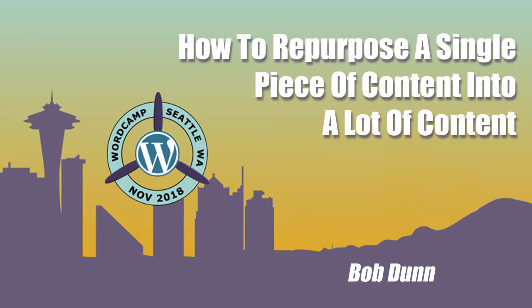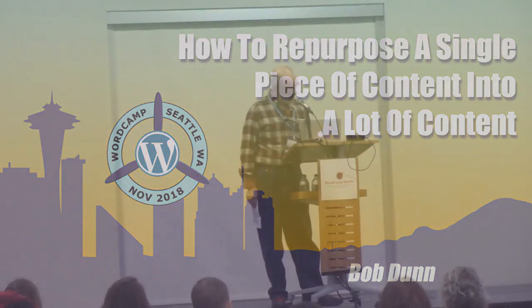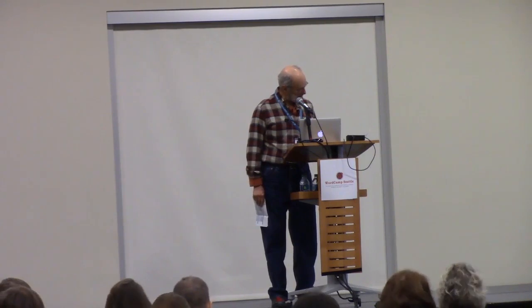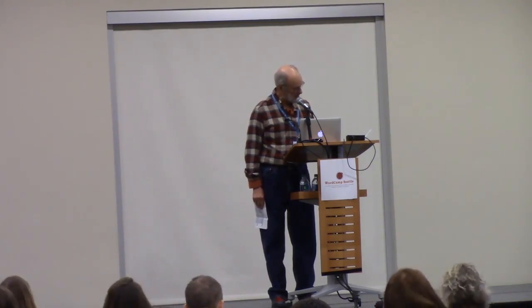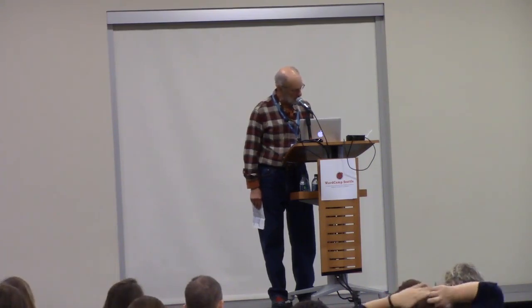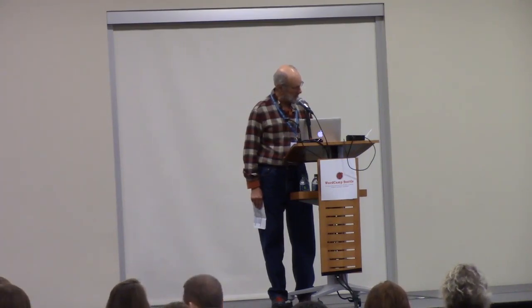Our speaker today is Mr. Bob Dunn, and his talk is How to Repurpose a Simple Use of Content and Roll-Up Content. In his 25 years of running a business, Bob Dunn has discovered that being flexible is the key to survival. His adventures in entrepreneurship began in the 70s when he found himself driving an ice cream car. Bob, known as Bob WP, has taught thousands of WordPress users and continues to stretch his creativity and find the best ways to help people sell their products and create and repurpose their content. Please welcome Mr. Bob Dunn.